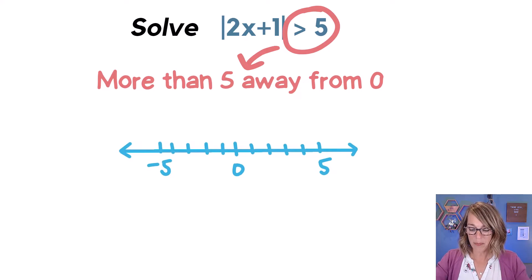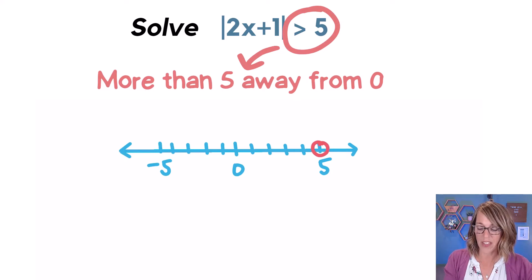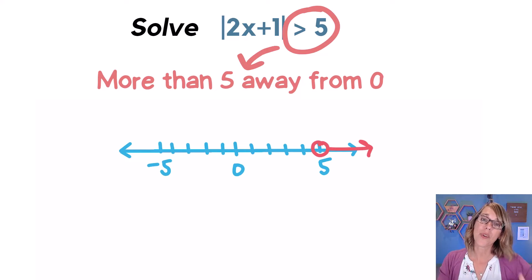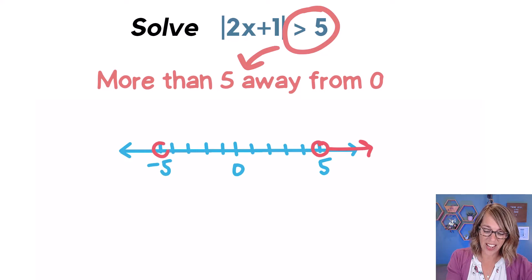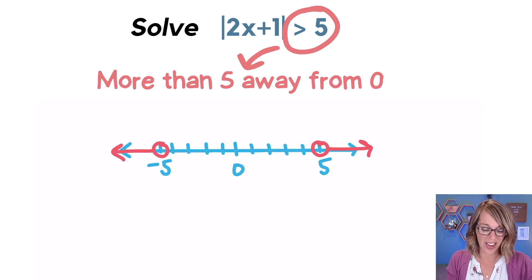Now, if I go to my number line, that tells me that I can't be exactly five away, but I can be more than five away. More than five away would start on the other side of five. So I'm going to put an open circle because I'm not including five. Anything bigger will work, and it could also be more than five away on the negative side — on the other side of negative five — and anything further away than that.